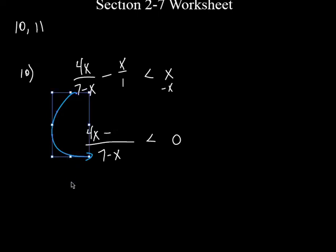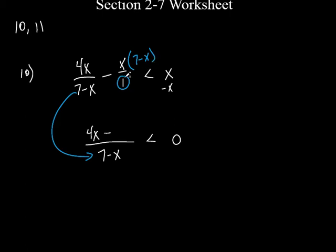Minus. What did you do to this 1 in order to get to this denominator? You multiplied it by 7 minus x, right? You multiplied by the whole entire thing. So what does that mean you have to do up here? Multiply that by the whole entire thing. Now notice what I did here — I put parentheses there. You had to know to do that. You didn't see parentheses down here, but you had to know to put parentheses here, because you have to distribute this through that whole entire thing.